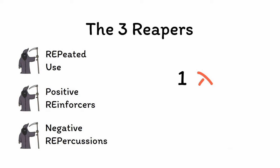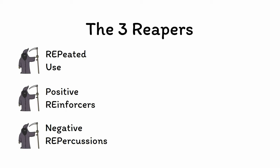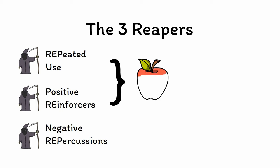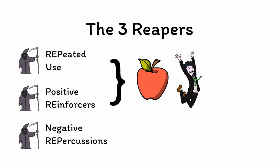None of these components on their own are sufficient to diagnose addiction, and even any two combined is not enough. It's only when all three combine that addiction emerges. For example, repeated use of positive reinforcers with no negative repercussions is not a problem — things like eating an apple a day could fall under repeated use of positive reinforcers, but because they cause no negative consequences, they would not meet any reasonable definition of addiction.